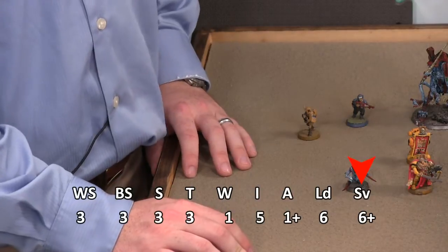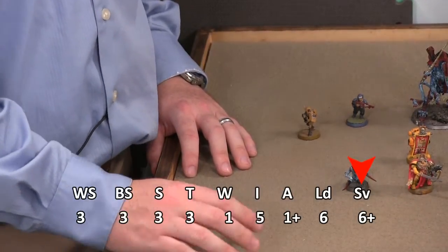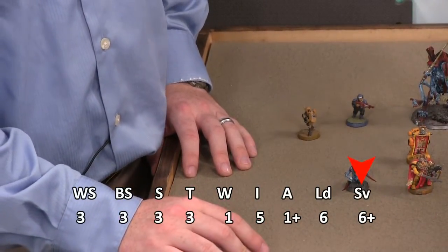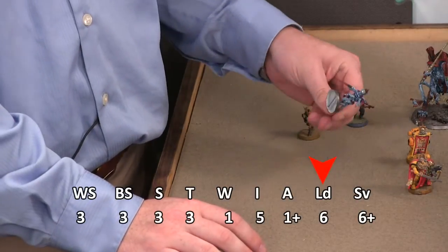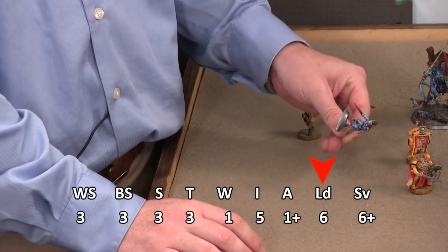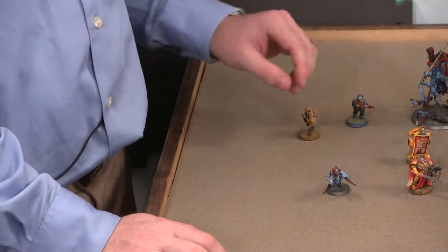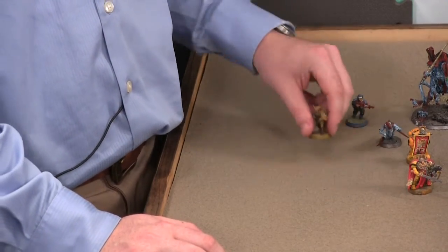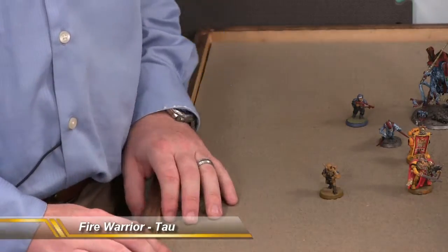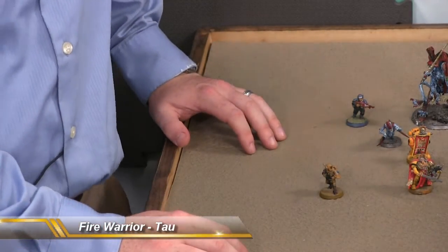But when there's one of them, they're pretty easy to take down. When you see a whole mess of them, not as easy to take down. The last one I got here, just a little bit different race. This is a fire warrior from the Tau Empire. And look at this stat line.